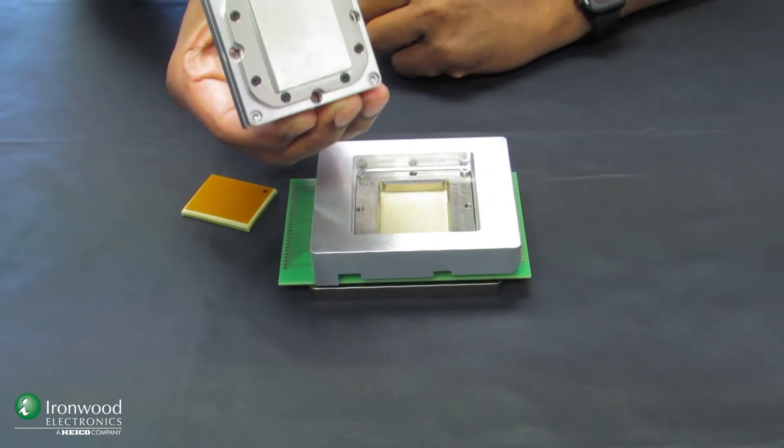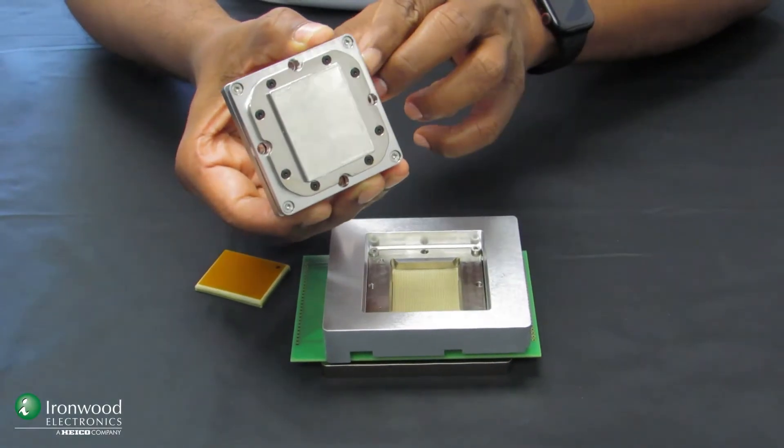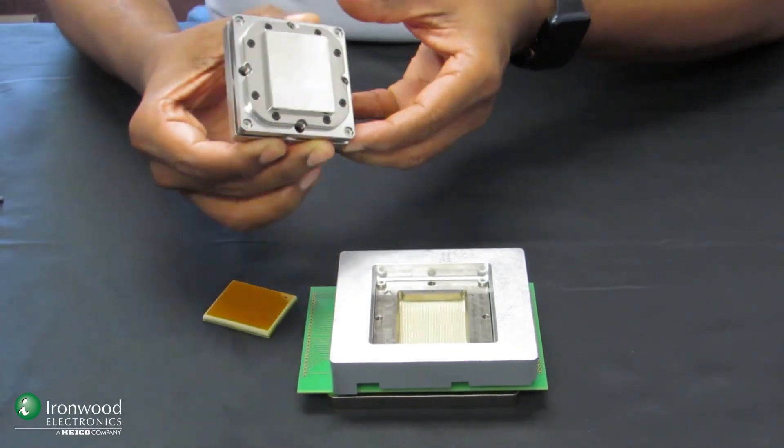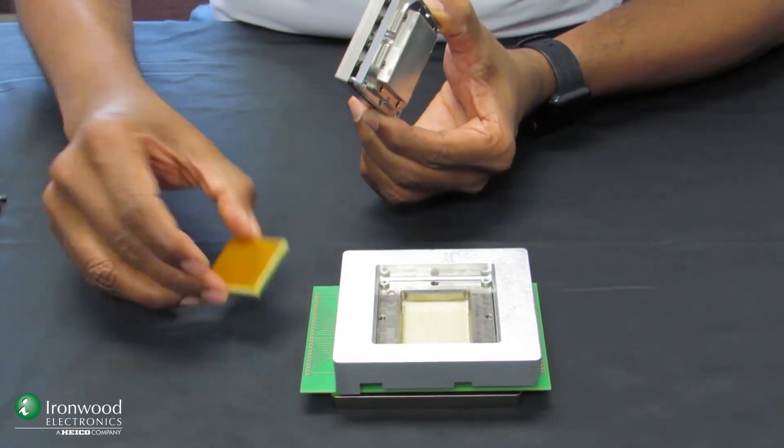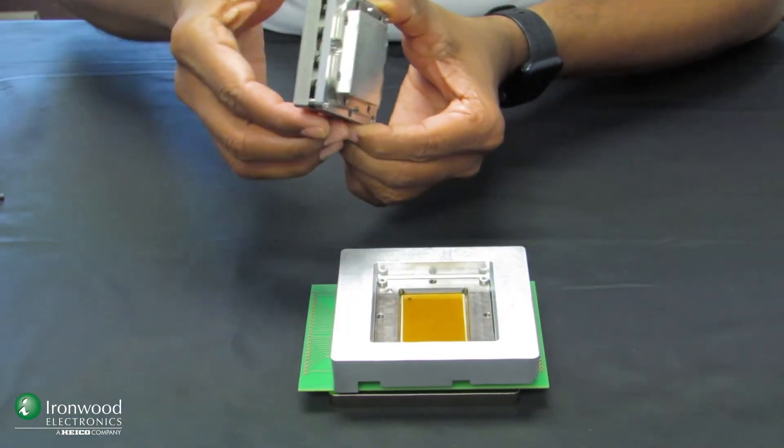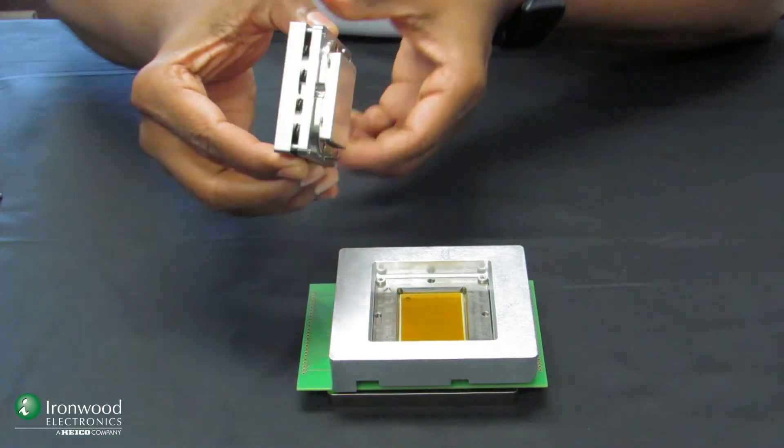This liquid cooled lid has a spring-loaded compression mechanism, so it serves two purposes. One, it compresses the device in the socket. And second, it removes the heat out of the socket.